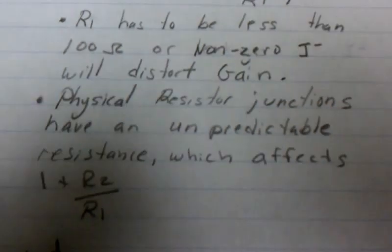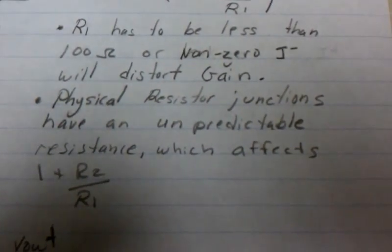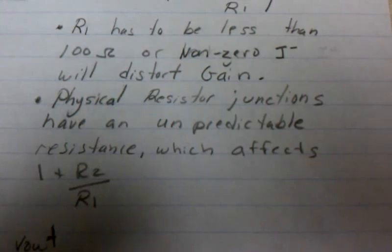Another problem is that physical resistor junctions have an unpredictable resistance which affects the gain.